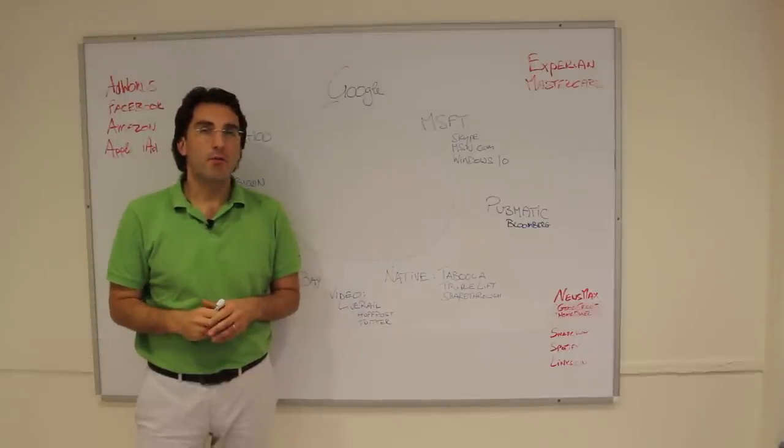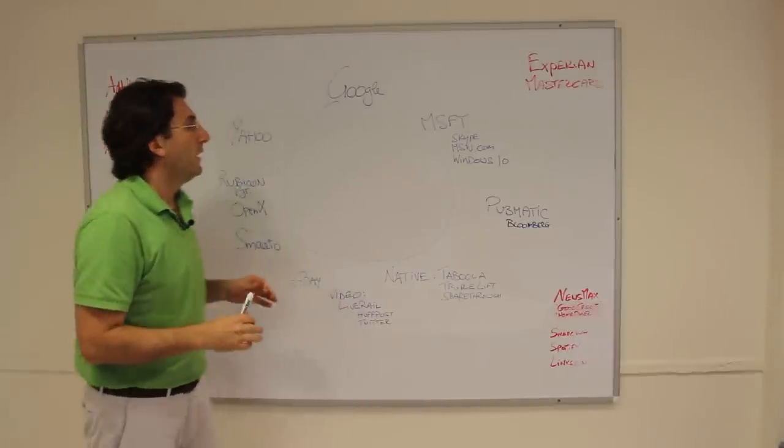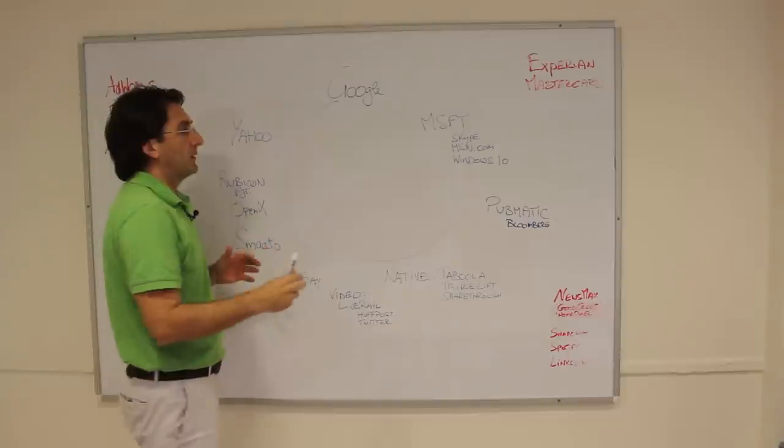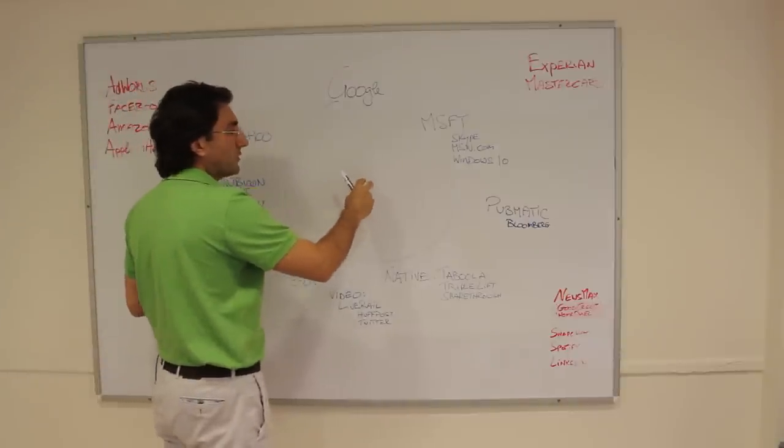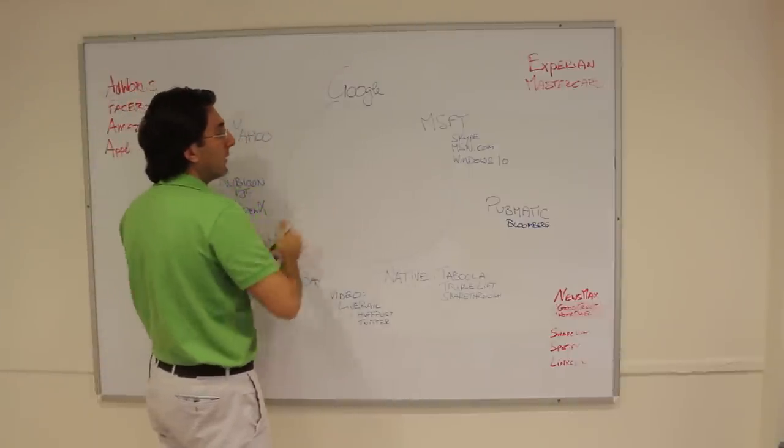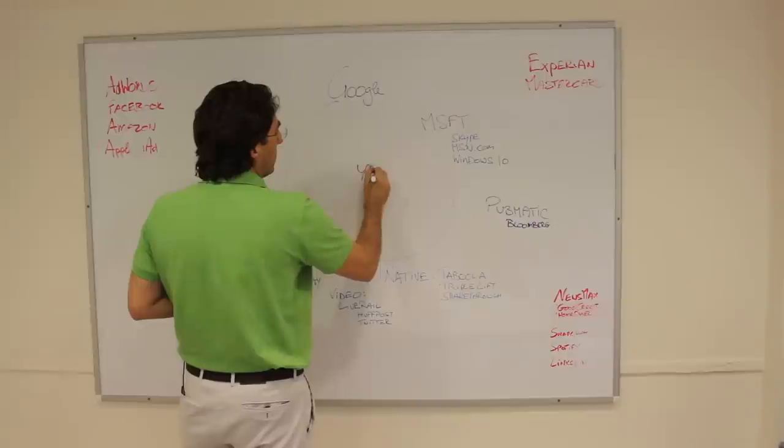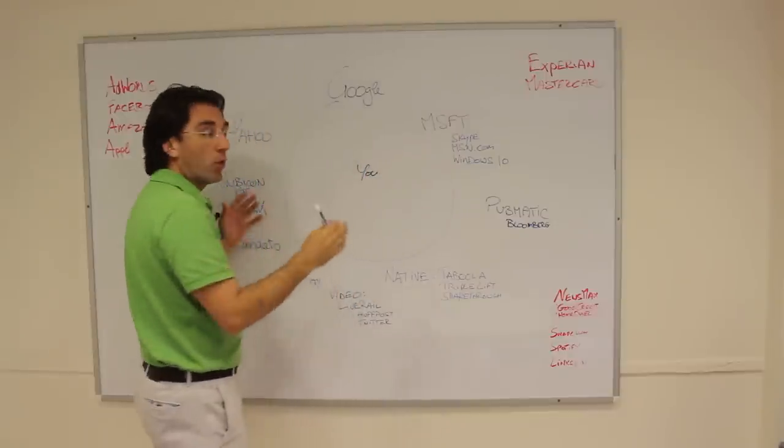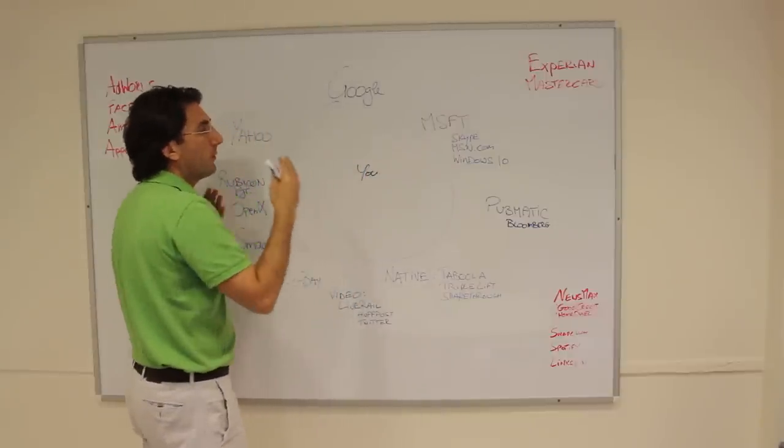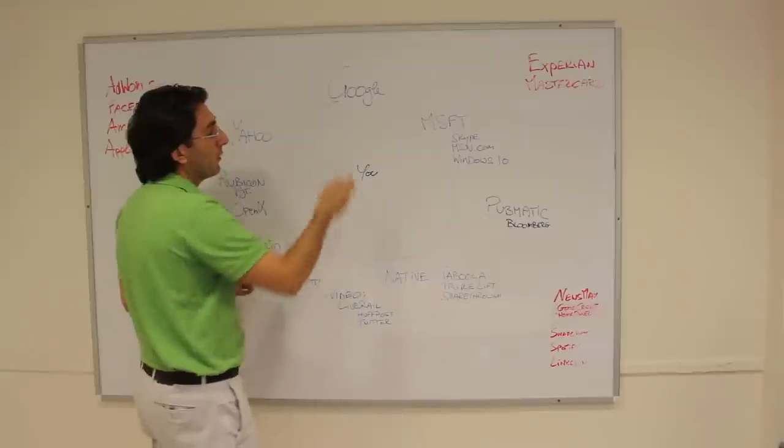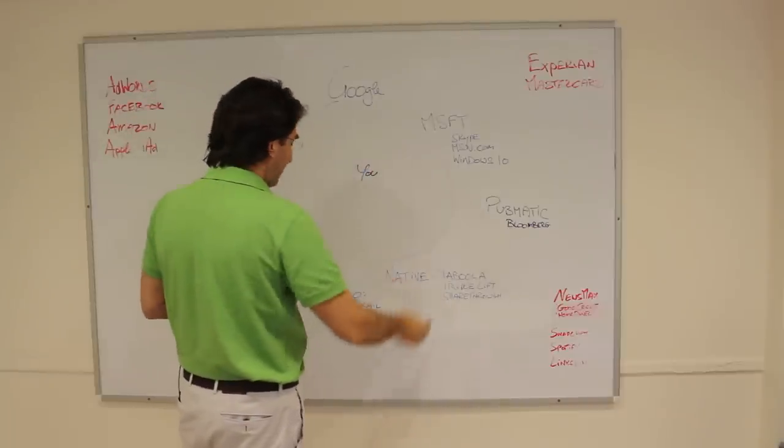Let me explain what happens when you buy from the exchange. An exchange is basically a marketplace. Imagine you're sitting in a room, and there's an auction going on. The people providing goods are Google, Microsoft, and Pubmatic.